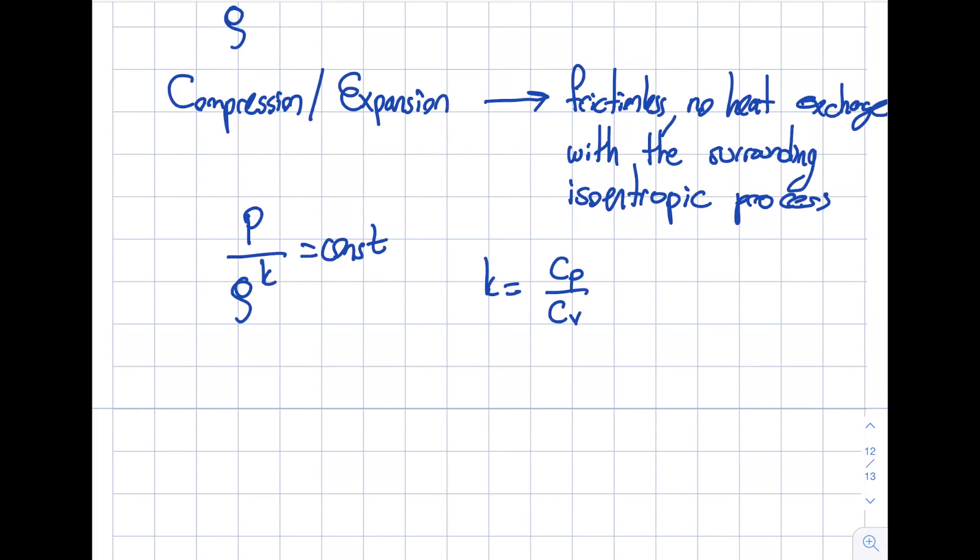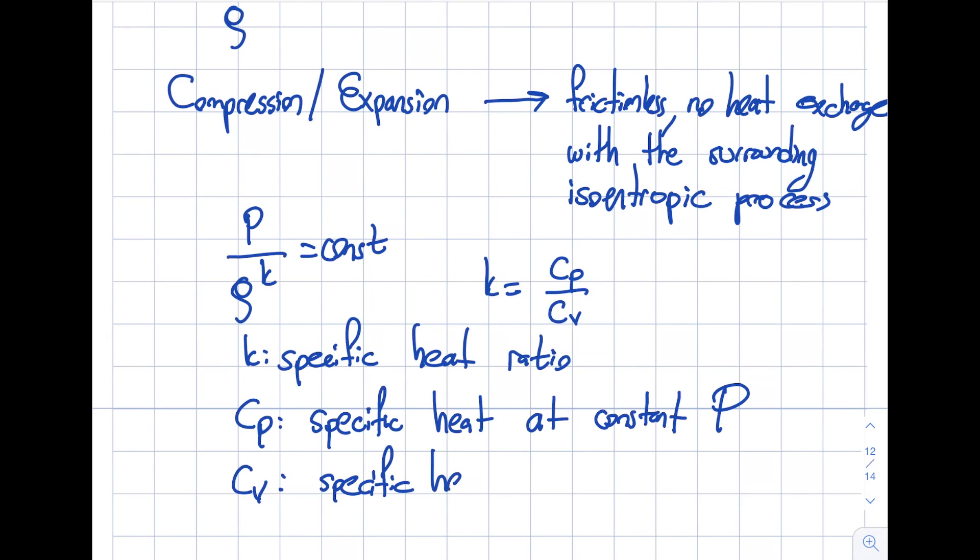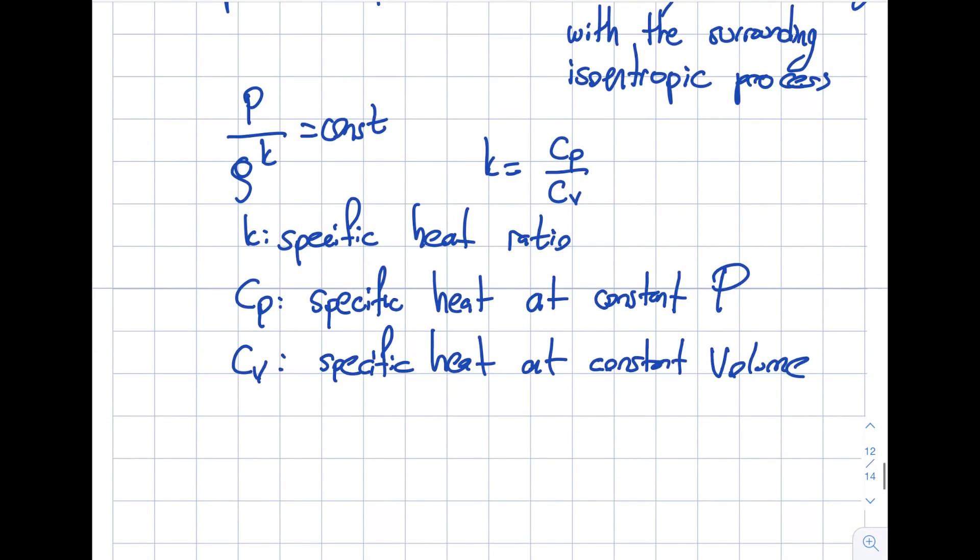This k over here is characterized by C_p over C_v. Let's write it here. This is the specific heat ratio. Every material has one. For instance, air is 1.4. C_p is the specific heat at constant pressure, and C_v, as you can imagine, will be specific heat at constant volume. V stands for volume, not velocity. I said that for ideal gases, P is equal to rho R T, and actually this R is C_p minus C_v, so they're all connected.